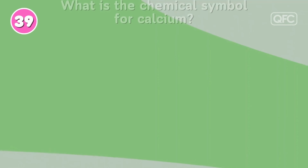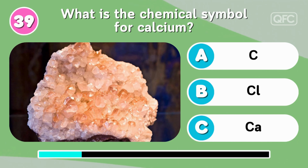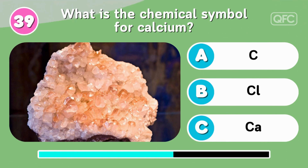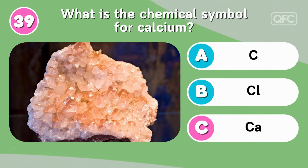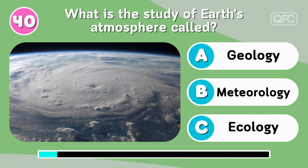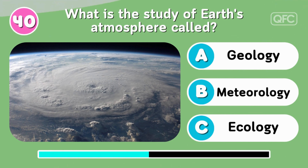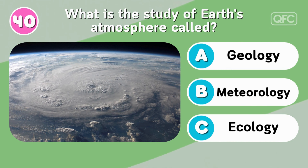What is the chemical symbol for calcium? CA. What is the study of Earth's atmosphere called? Meteorology.